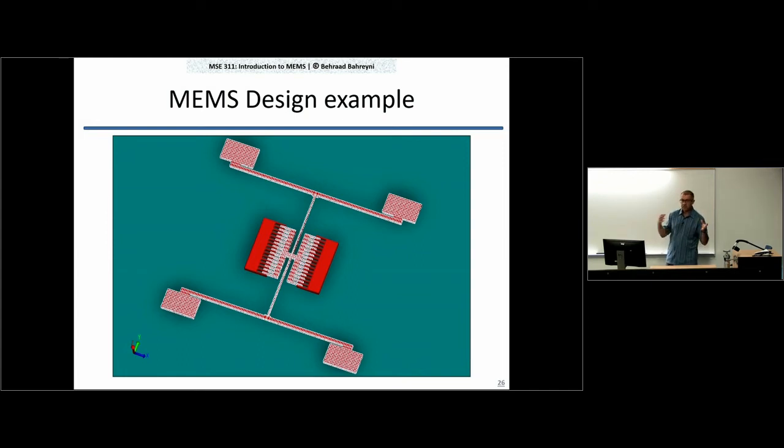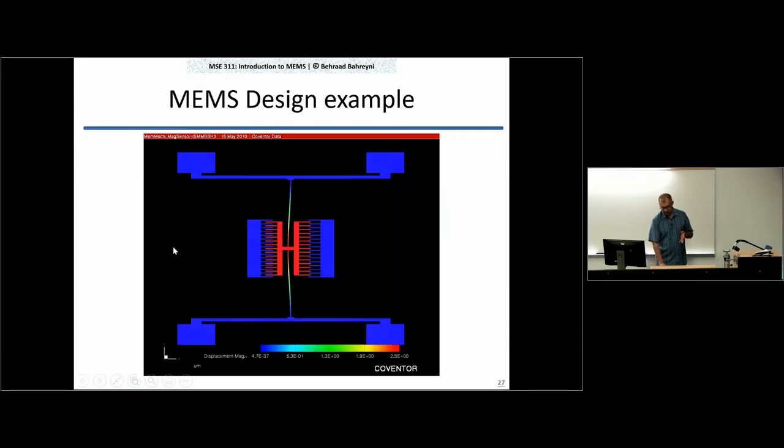So this, for example, is a finite element model for the structure. I mesh it using the proper mesh type and size. And I can look at different responses of this structure. So for example, in here, I look at the response of a device under some electrostatic force. If I apply a voltage to the electrode on the left side, for example, or right side, what happens? It's going to pull the moving part towards itself. And the red means more displacement. So I can see that most of the displacement is happening in the middle of the structure. The rest of it is blue, essentially, not moving.